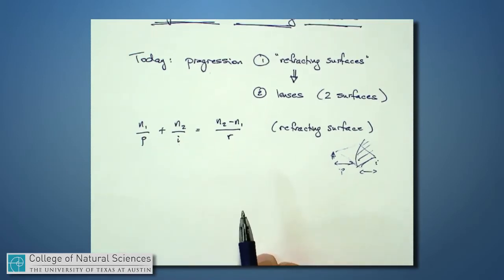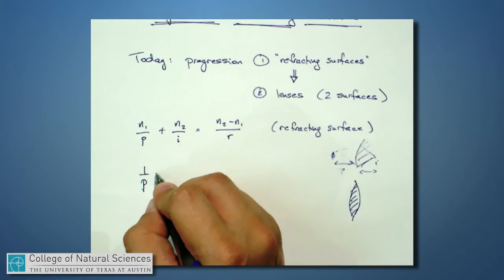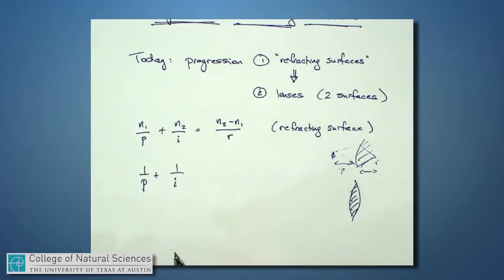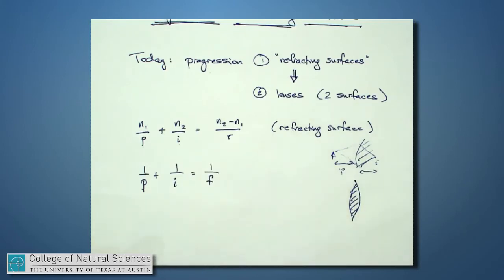The second equation I want us to know is when we have not one but two surfaces and we make something like a lens, there is a relationship between the object distance p, or one over it, the image distance i,